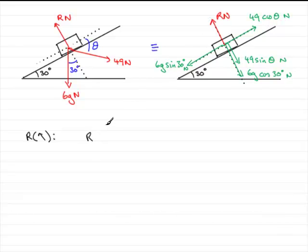And then we have the components of the weight, 6g Newtons, and the component of the 49 Newtons acting in towards the plane.